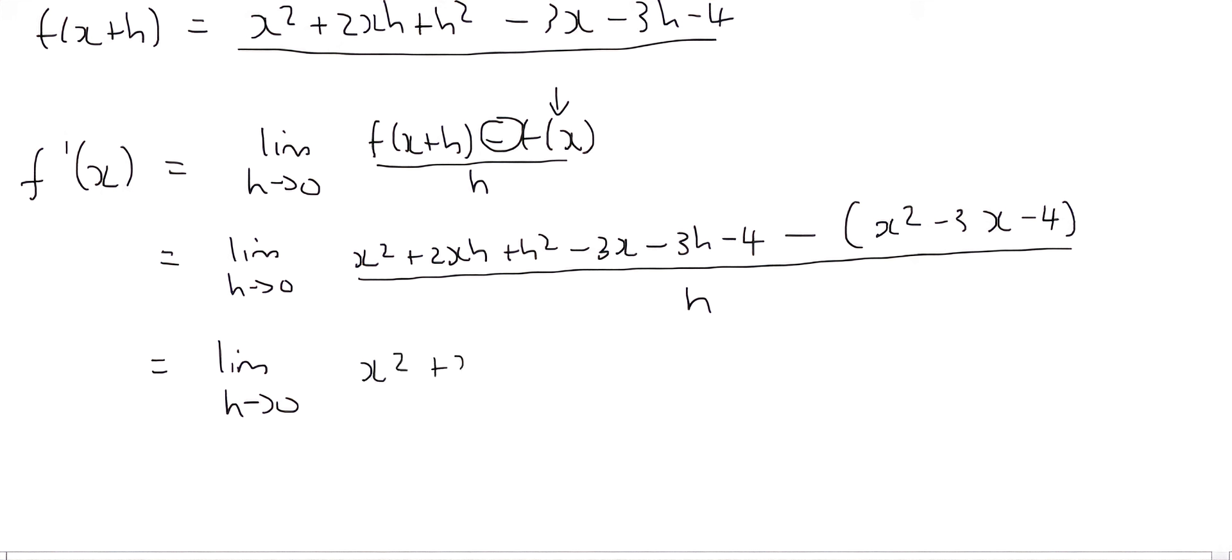So we're going to say limit as h goes to 0. And then we're just going to write x squared plus 2xh plus h squared minus 3x minus 3h minus 4. Then this minus is going to jump in. So it's going to be minus x squared plus 3x plus 4. And that's all over h.